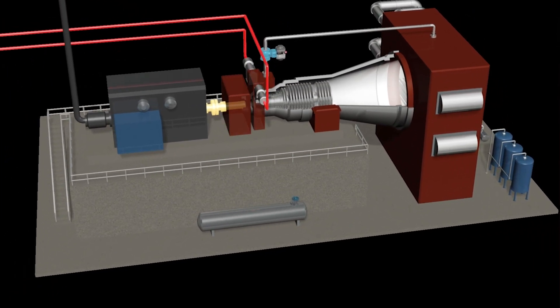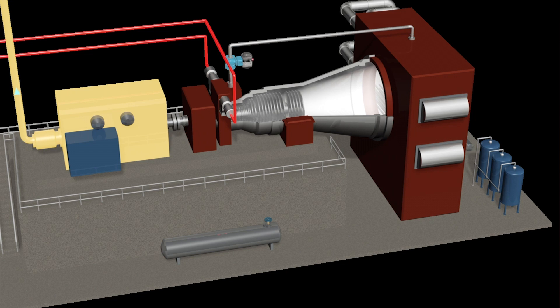A shaft connects the turbine to the generator. The generator turns to make electricity.